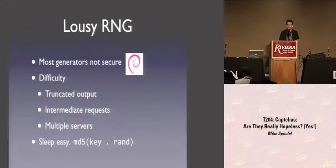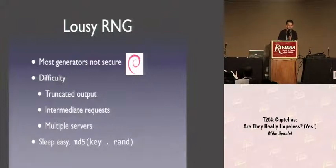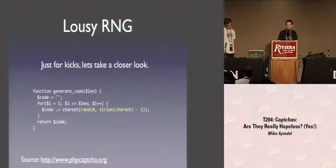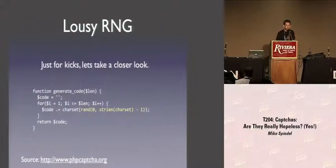In PHP, they might just call RAND. Reconstructing the sequence from just a couple of capital letters is a little tricky because you're looking at truncated output — a large number indexed into a fairly small number of bits — and you have to worry about intermediate requests to the random number generator and multiple servers sitting behind a load balancer. But you'd really like the security of your implementation to be independent of the web server configuration. So just use MD5 combined with a key and the output of the random number generator.